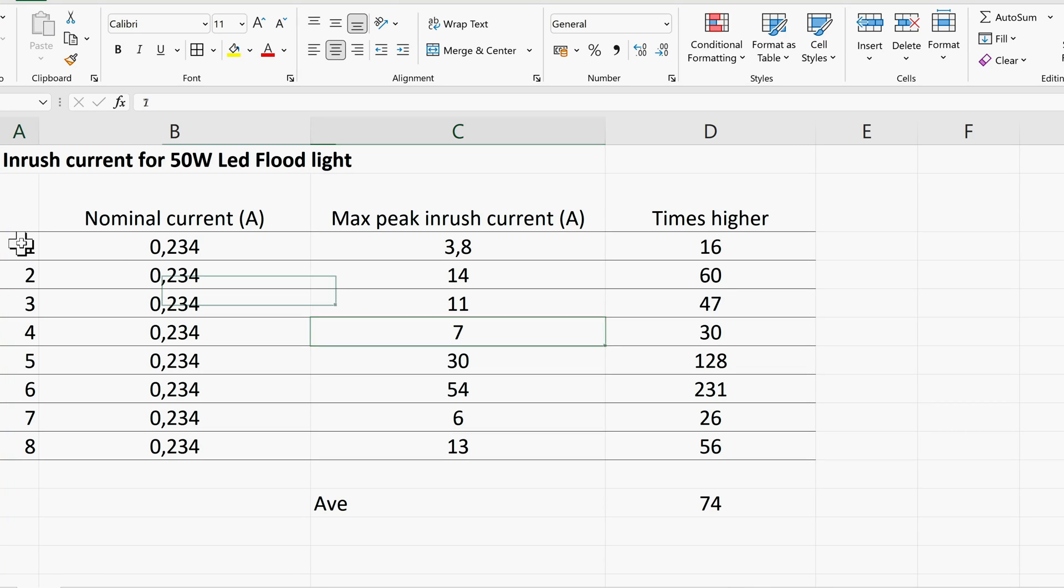Okay, just analyzing some of the results. All right, on the left hand side here I've got the attempts, when I was switching it on and off. And then these are the nominal currents. The current stays the same. So the current for the 50 watt floodlight was 0.234 amps. And over here in column C these are the peak inrush currents. What I have here in column D is the times higher. How many times higher was the maximum peak inrush current than the nominal current. So looking at the first attempt, 3.8 amps is 16 times higher than the nominal current. Over here you can see that 14 amps is 60 times higher.